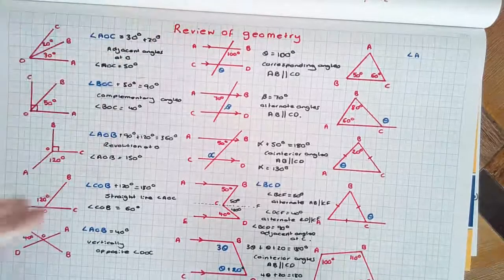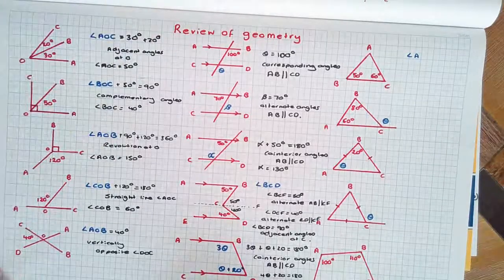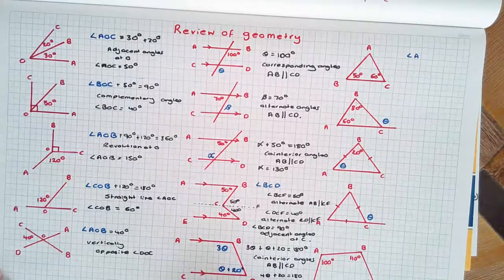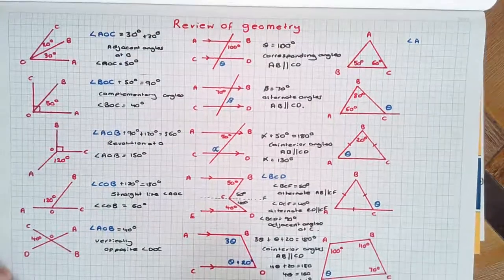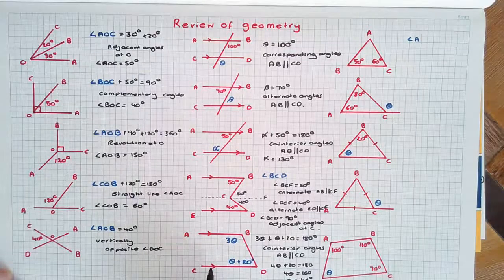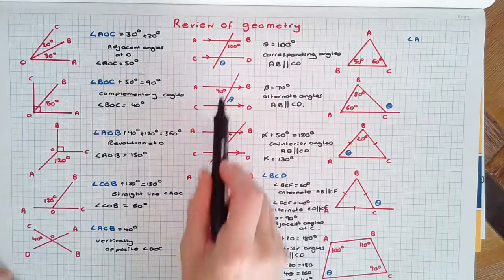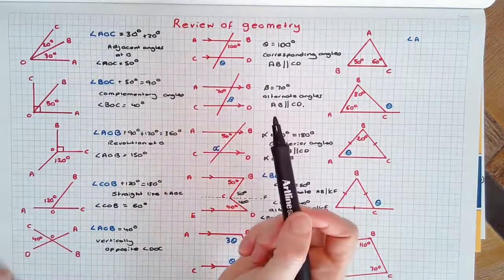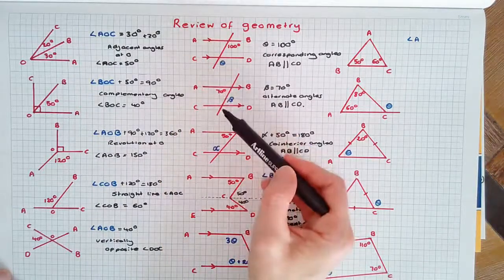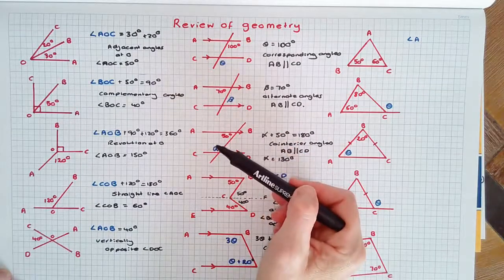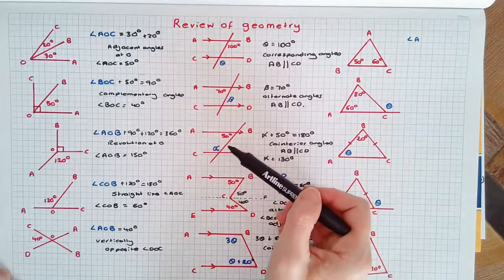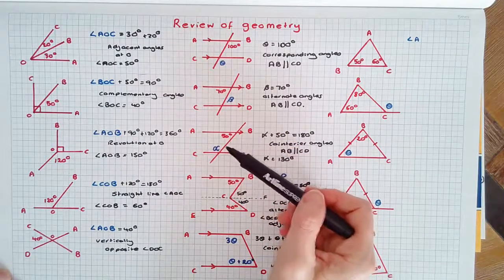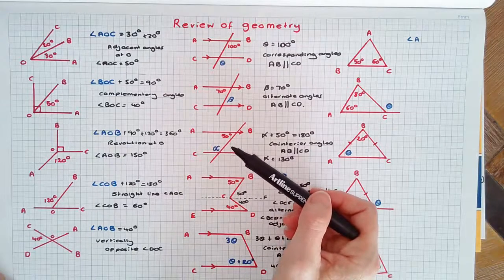Corresponding, alternate and co-interior angles can also be used to prove if lines are parallel. If we knew the value of any of these angles and didn't know that the lines are parallel, if the corresponding or alternate angles are equal we can prove the lines are parallel, or if the co-interior angles are supplementary we can also prove that the lines are parallel.